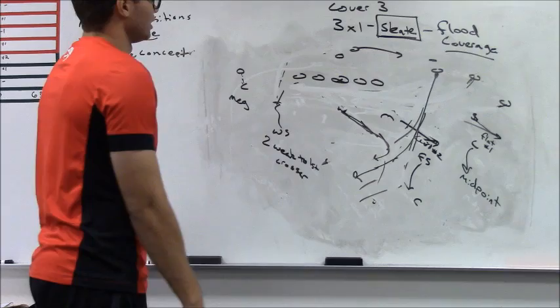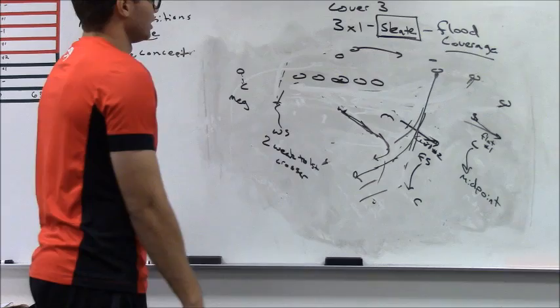That's how we play skate to a regular 3 receiver set. With strong and weak flow. It's a type of weak side rotation flood coverage to 3 by 1.